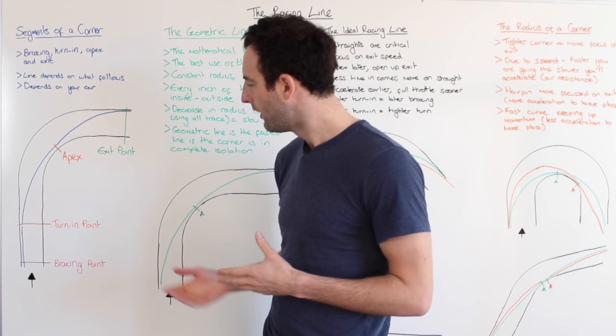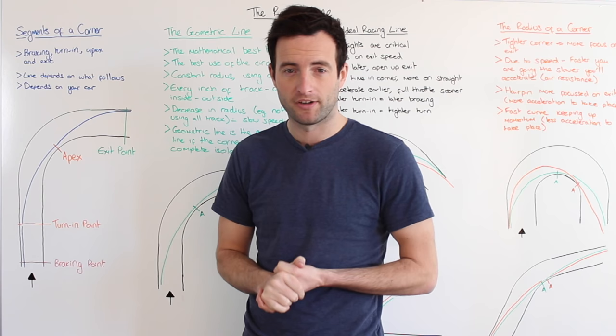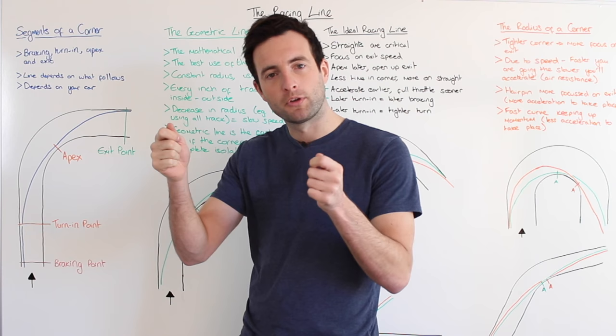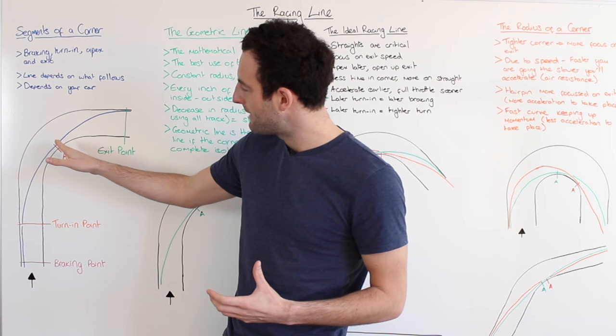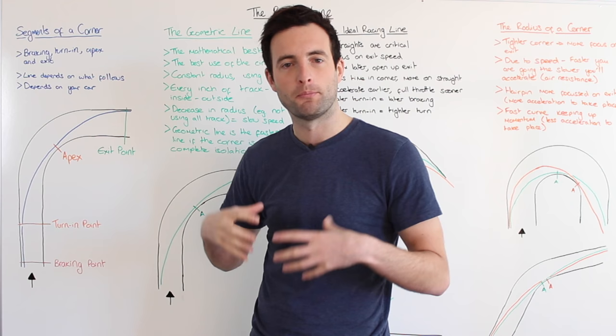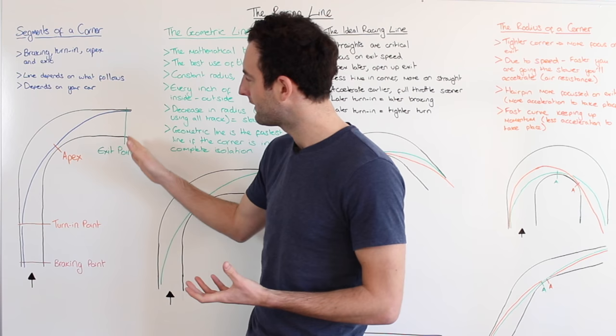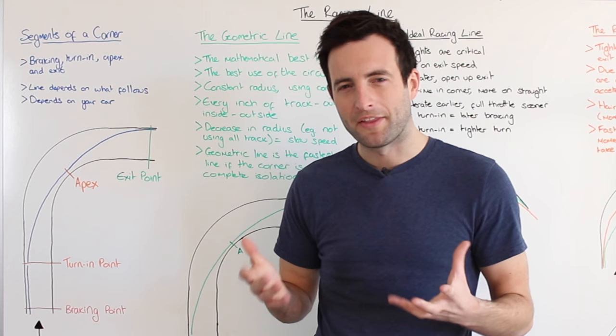So we're arriving at the corner, we get on the brakes, and this is what we call the braking point — very simple. After this, as we're decelerating the car, we have the turning point, which is where we turn the car into the corner. At the turning point we're actually aiming for the apex point, which is where you and the car will meet the inside of the corner to maximize the arc and speed through that turn. After this we have the exit point, where we allow the car to push all the way to the outside of the circuit.